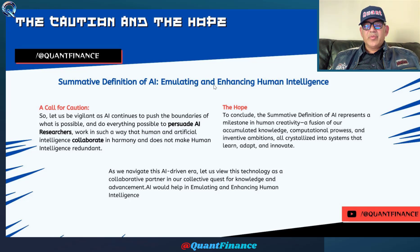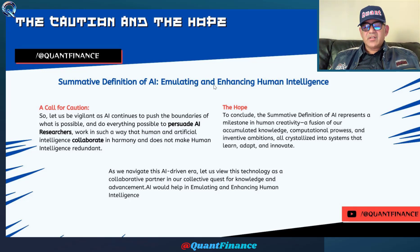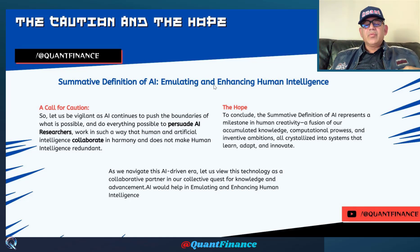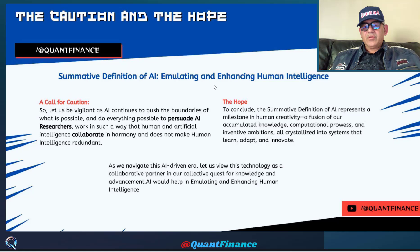This is the summative definition of AI that we started with. There is also a caution and hope. The caution is that we need to persuade AI researchers — and by that I mean the big tech companies — to direct it and use it in such a way that artificial intelligence collaborates harmoniously with human intelligence and does not make human intelligence redundant, as more and more people are fearing the loss of jobs because of AI tools. The hope is that artificial intelligence would emulate and enhance human intelligence and not make it redundant.